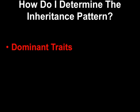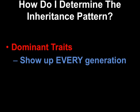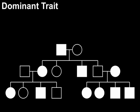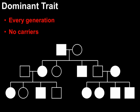How do I determine the inheritance pattern of a pedigree? If I'm looking at a dominant trait, it's going to show up in every generation and there's not going to be any carriers. Here's an example of a pedigree for a dominant trait — notice every generation somebody has it, and nobody is a carrier, because if you have a dominant allele, you have the trait.